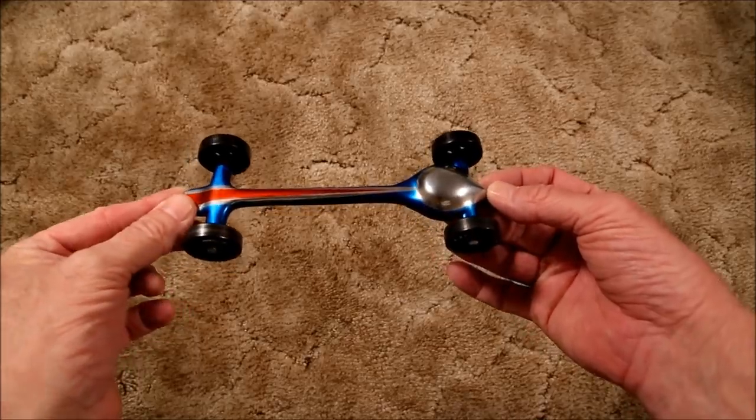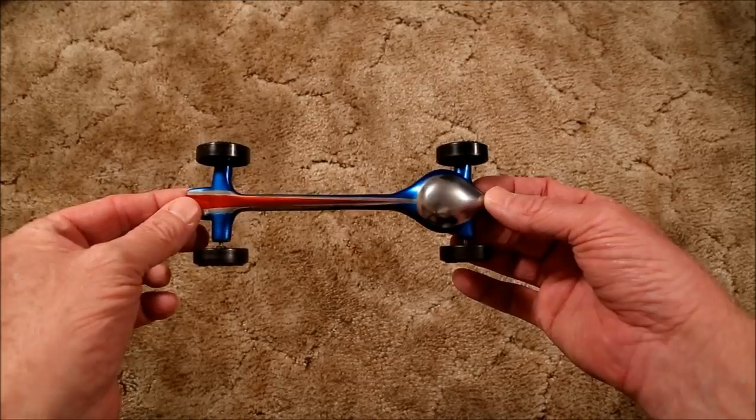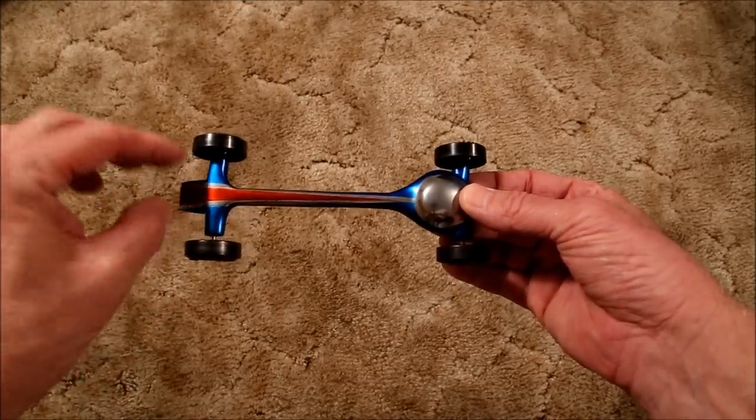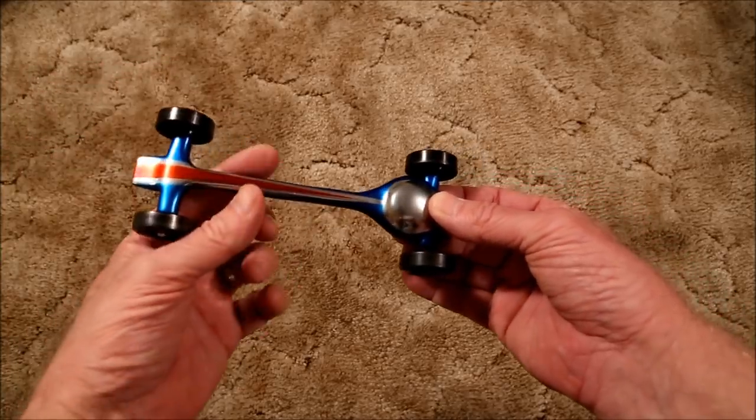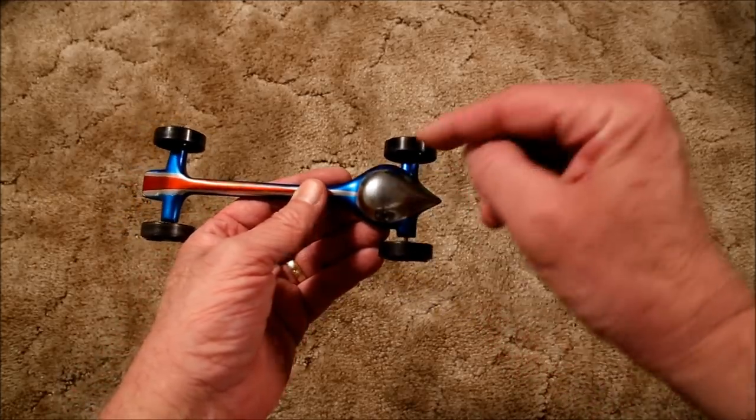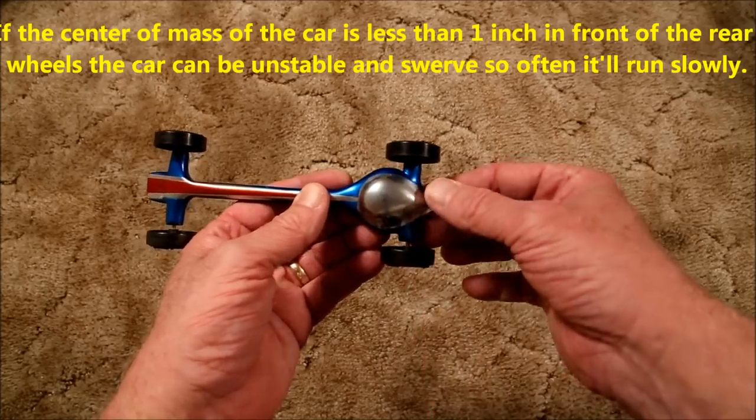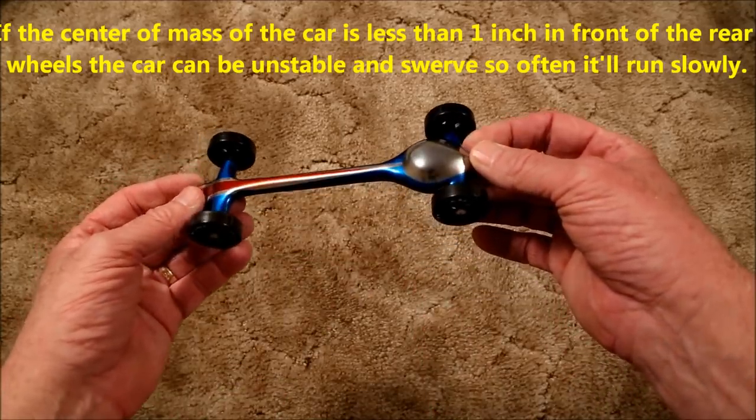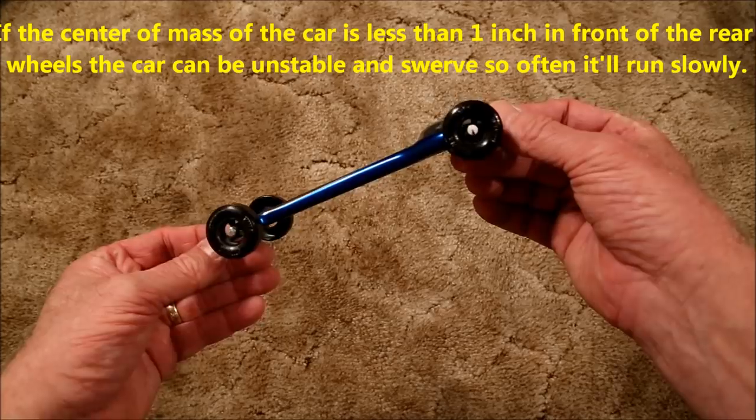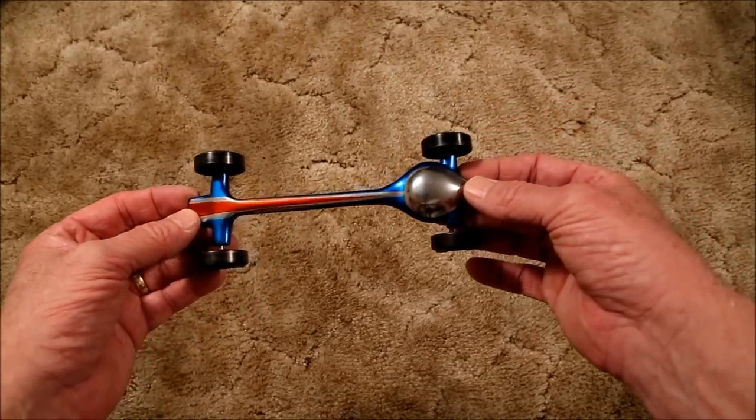When it comes to pinewood derby race cars, physics determines the shape. You want as little wood or as little weight in the body as possible so you can concentrate all of the weight about an inch in front of the rear wheels so that it has as much weight as high as possible so it accelerates the car down the ramp to the greatest speed possible.